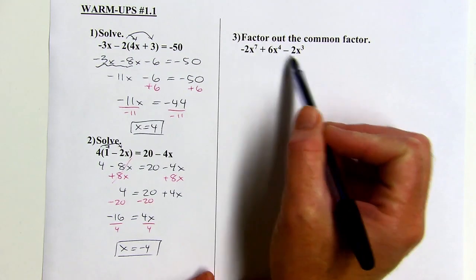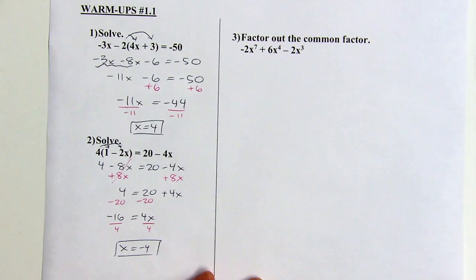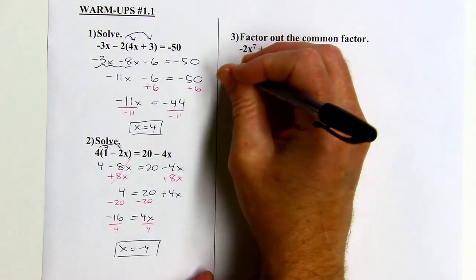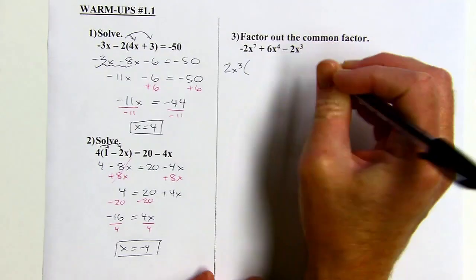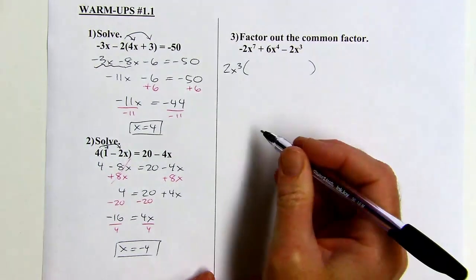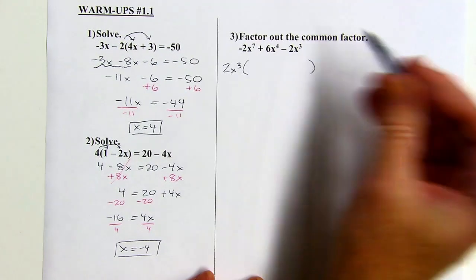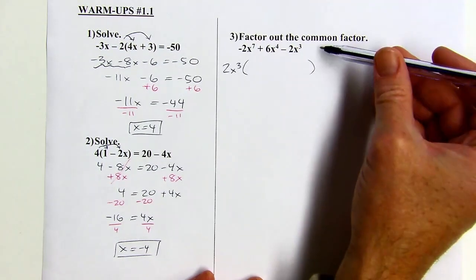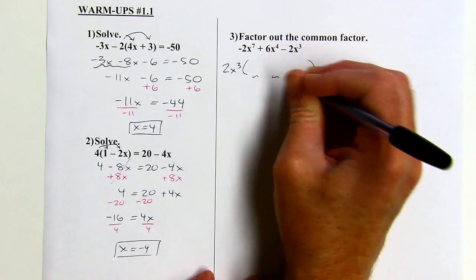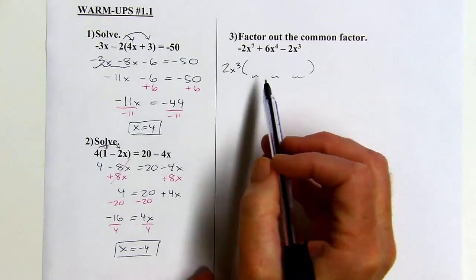So, they all have at least three x's, right? So, I want to factor out a 2 and an x to the third. Okay, and then I'm thinking about it like distributing. I'm thinking, well, what would I have to distribute 2x to the third into to get this original trinomial? So, I'm thinking, I need three terms to distribute over.